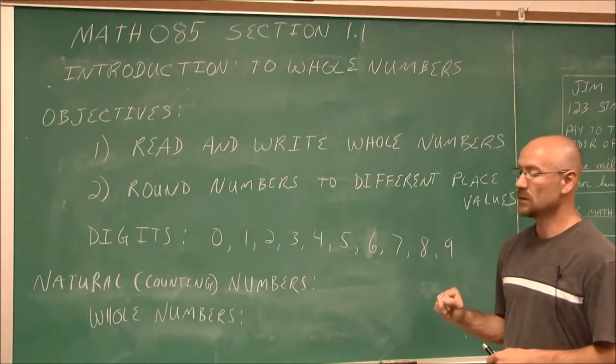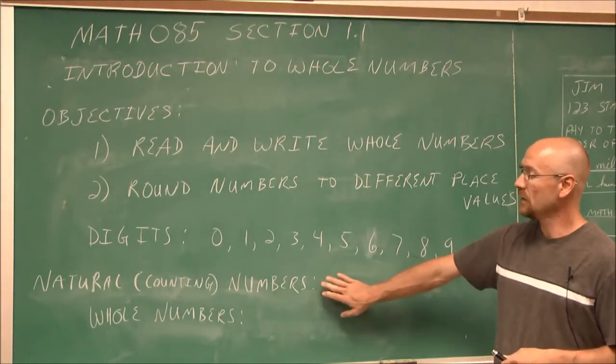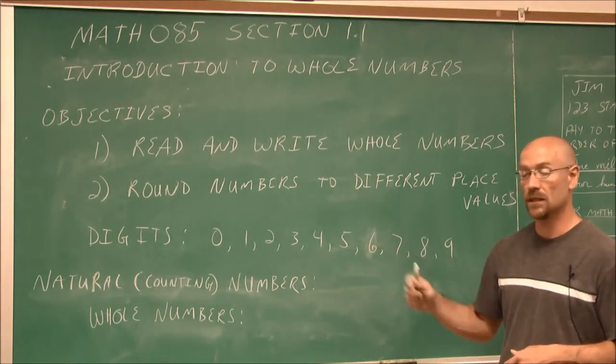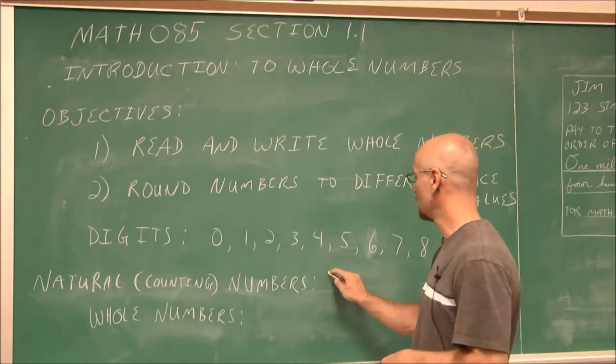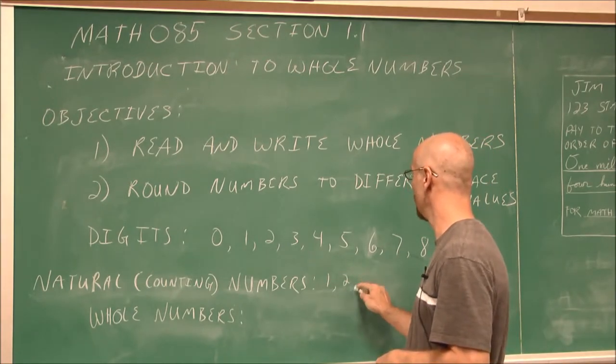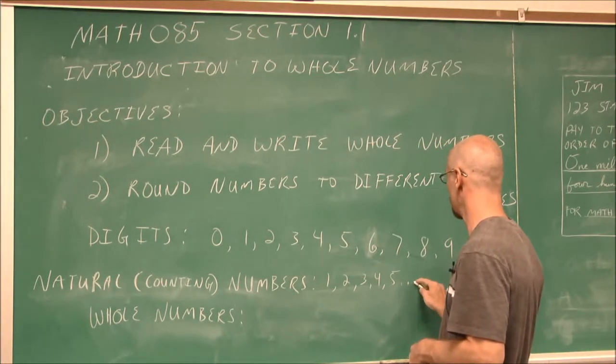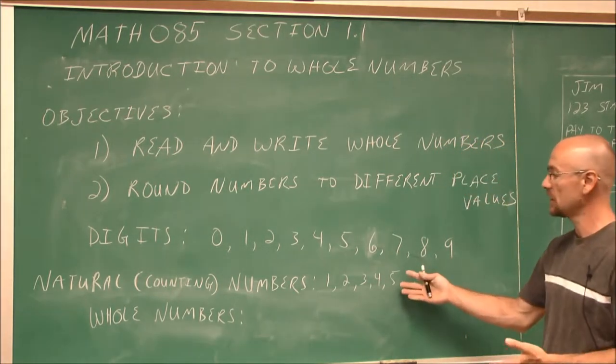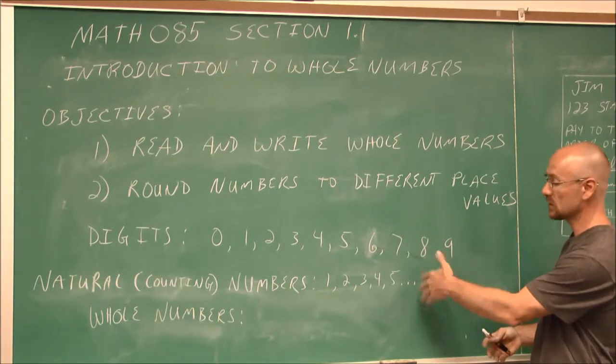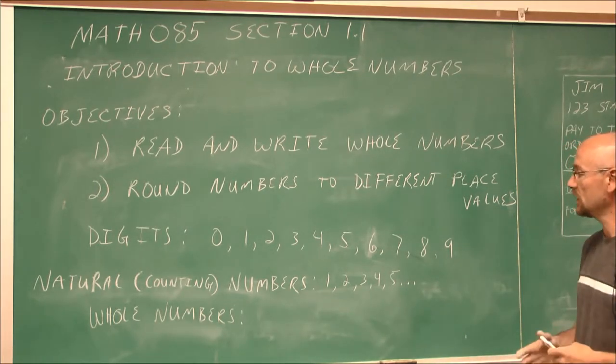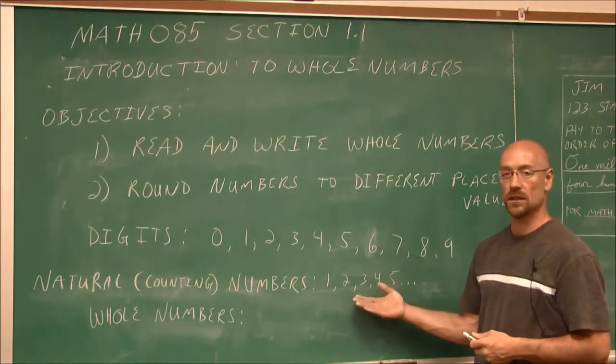And they fall into different classifications. And the first one is our natural numbers, which is also called our counting numbers. And those are 1, 2, 3, 4, 5, and I'm going to put a series of ellipses. These three dots just identify that this would continue, of course 6, 7, 8, 9, 10, 11, 12, 13, all the way on through infinity. So those are our counting numbers.